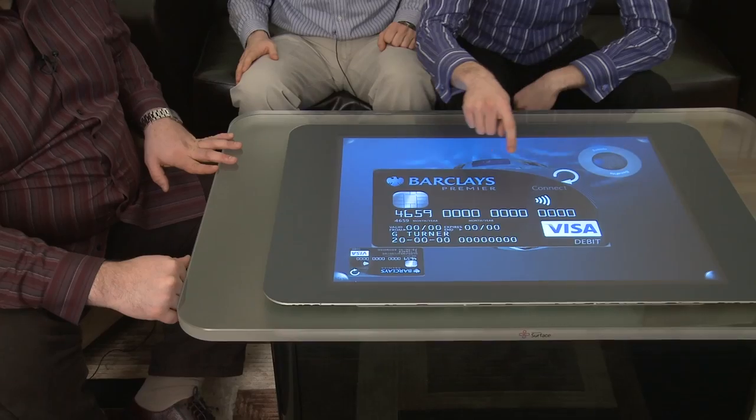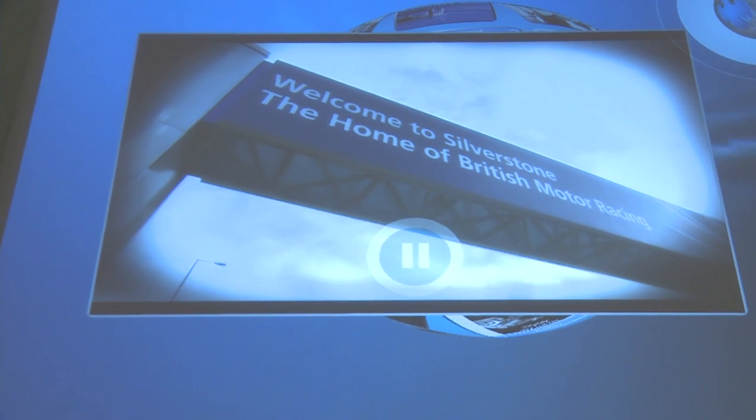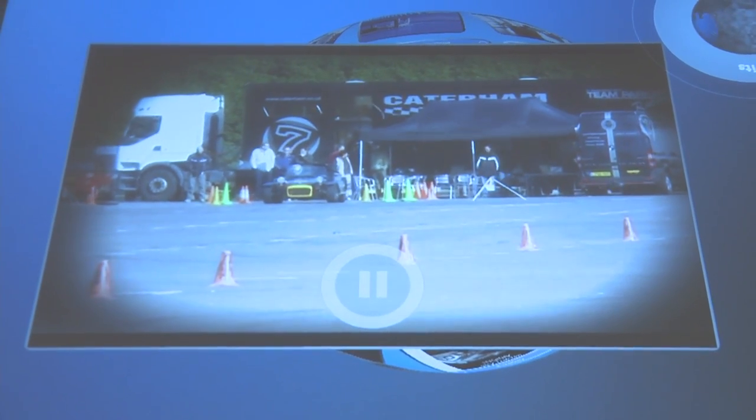Also one of the great things about the Microsoft surface is that we can display really rich media like on the back of this debit card here. We have a high resolution video about Barclays again. And the great thing about the surface is that it's such an emerging technology that we are very interested in seeing how far we can push this and get the most out of it to allow us to customize and meet our clients' needs.